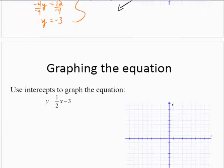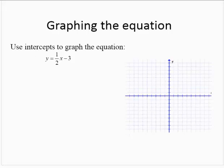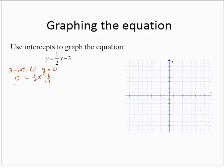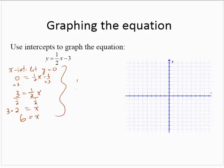One more example: use the intercepts to graph y equals one-half x minus 3. Let's find the x-intercept first by letting y equal 0. We have 0 equals one-half x minus 3. Adding 3 to both sides gives 3 equals one-half x. Dividing by one-half — the same as multiplying by 2 — gives x equals 6. So the x-intercept is 6, 0.